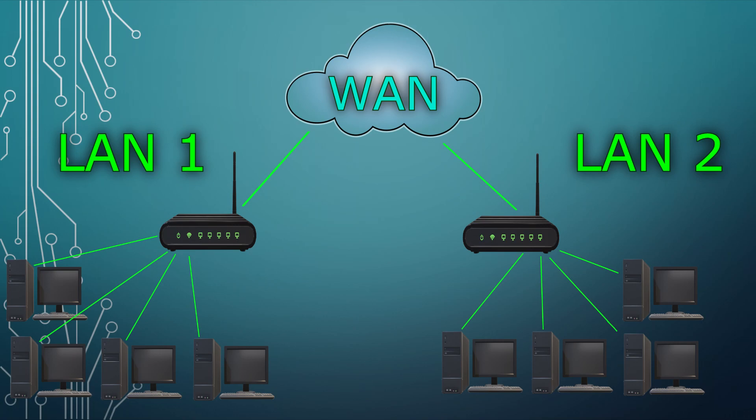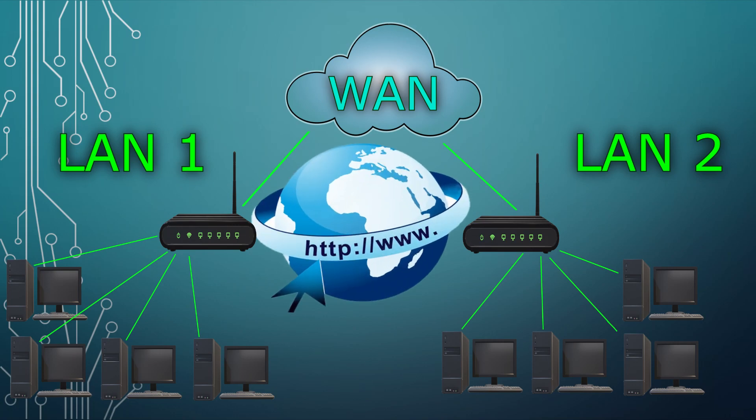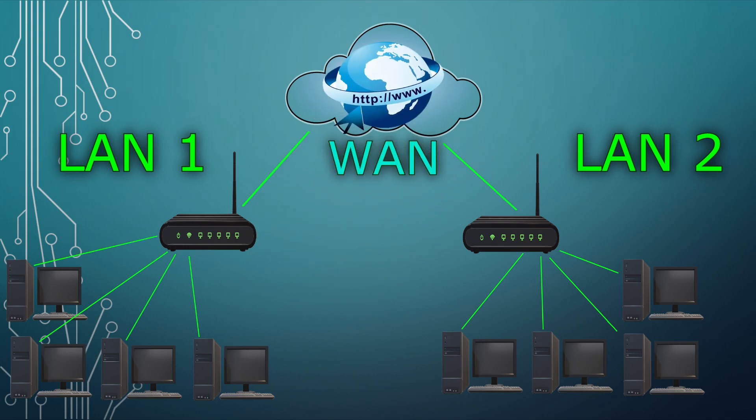One of these types of networks you may have heard about is the internet. The internet itself can be regarded as a wide area network, as it is just one global network that ties together many other smaller networks. But the internet is of course just one of many wide area networks out there, and a WAN obviously doesn't need to be as big as the internet.